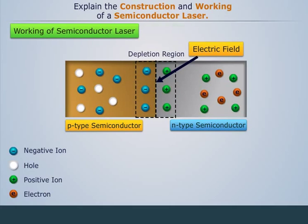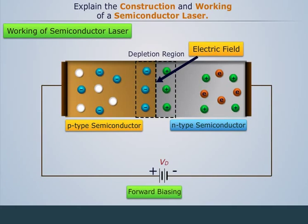Now let's understand the working of this semiconductor laser. When this P-N junction diode is forward biased by connecting the positive terminal of the battery with the P-type semiconductor and negative terminal of the battery with the N-type semiconductor.